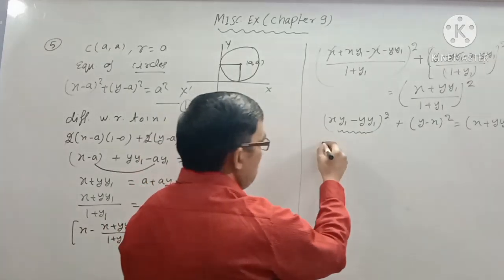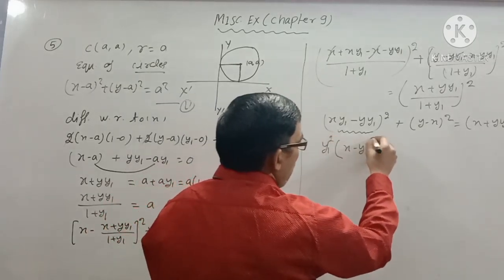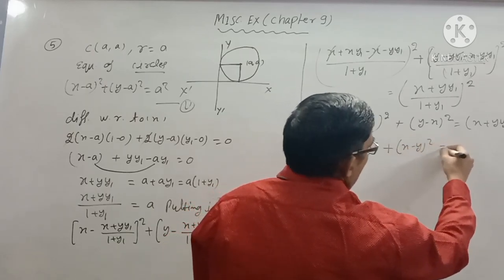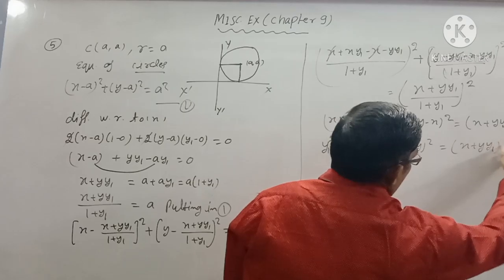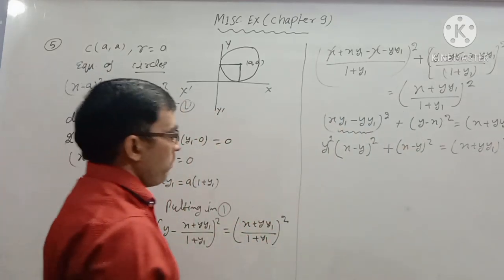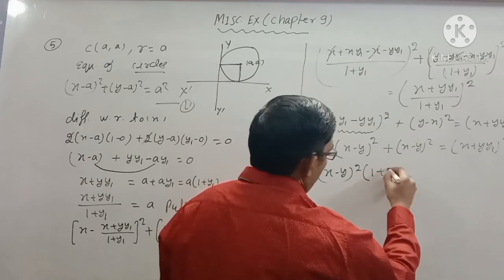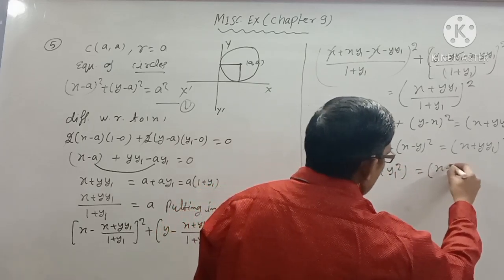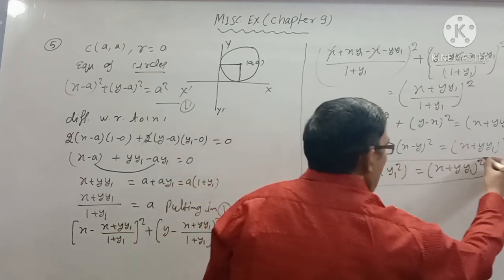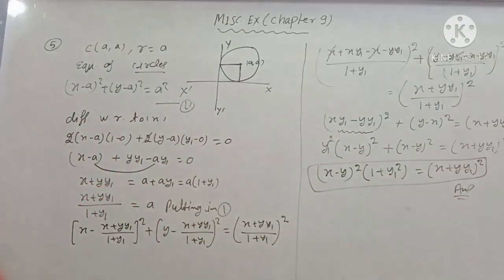The result (xy₁ - y)² + (y - x)² = (x + y·y₁)² is your answer. Please make a note of it.